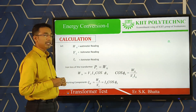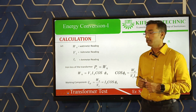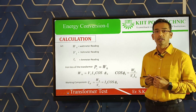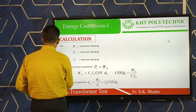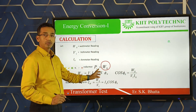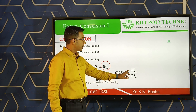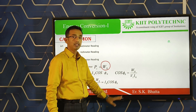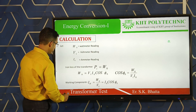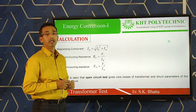For the calculations: W₀ is the wattmeter reading, I₀ is the ammeter reading (no-load current), and V₁ is the voltmeter reading. The wattmeter reading gives the iron loss: Pᵢ = W₀. The no-load power factor is cos φ₀ = W₀ / (V₁ × I₀). The working component of current is Iw = I₀ × cos φ₀.